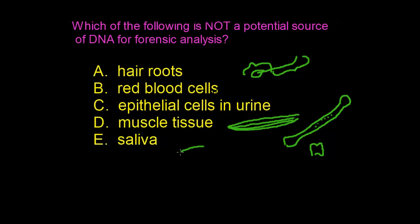As for saliva, saliva itself doesn't contain DNA, but cheek cells shed from the inner layer of the cheek are always present in saliva. Those epithelial cells contain DNA. Different types of crime evidence — such as bite marks, cigarette butts, and postage stamps on envelopes — can be used for DNA analysis.